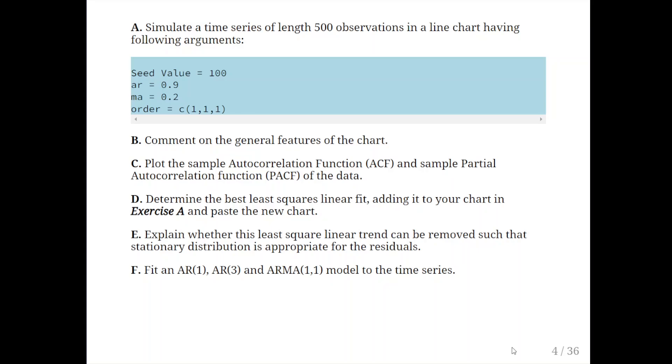Simulate a time series of length 500 observations in a line chart with the following arguments: set the seed equals 100 - that's set.seed(100), AR equals 0.9, MA equals 0.2, and order equals c(1,1,1). We're going to use those values when we set up the time series analysis. Comment on the general features of the chart. Plot the sample autocorrelation function (ACF) and the sample partial autocorrelation function (PACF) of the data.